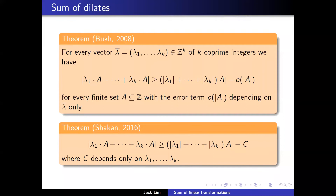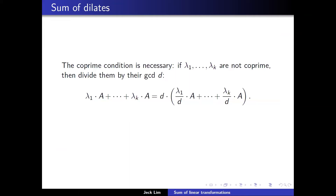In the theorem, we need a condition that the integers are all co-prime, because if they're not co-prime you can simply divide them by their GCD and it'll be the same size. Also the result is tight, because if you just take A to be an interval then you get equality up to the linear term.